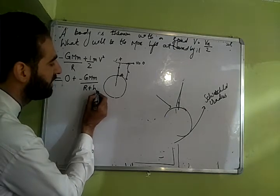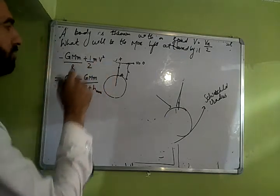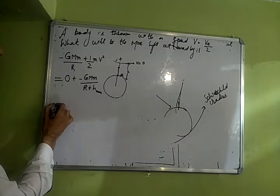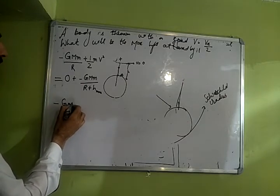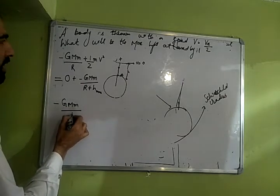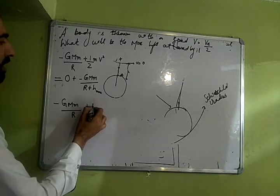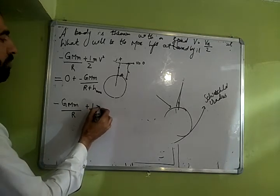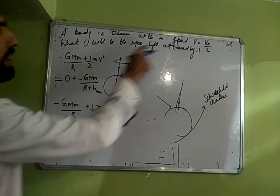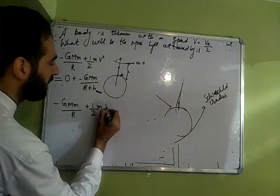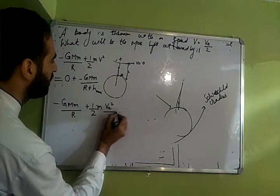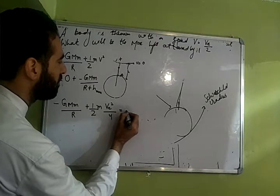This h is which height? This is the maximum height attained by this object. Chalo bata kaise nikalo ki minus g capital M small m by r plus half m, bolou beta kis speed se aapne surface se phenka hai? v by 2. To yeh na aayega v square by 4.